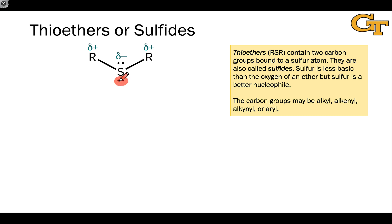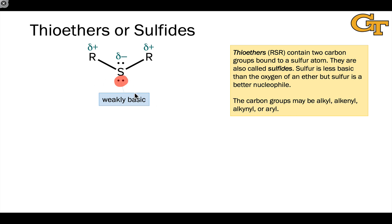Like ethers, the sulfur atom of a thioether is weakly basic, but a pretty good nucleophile. The pattern here follows the same pattern we saw for alcohols and thiols, where the sulfur is a weaker base than the ether oxygen, but a better nucleophile.